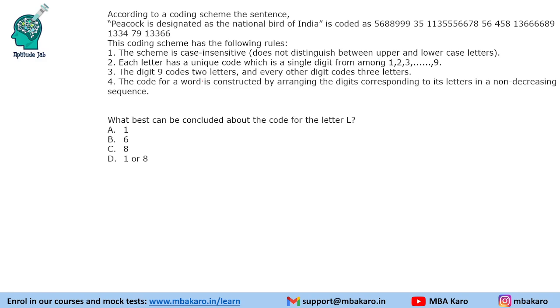The digit 9 codes for 2 letters and every other digit codes 3 letters. So we have 8 digits coding 3 letters each and 9 coding 2 letters. So total all 26 letters of English alphabet are coded using these digits. The code for a word is constructed by arranging the digits corresponding to its letters in a non-decreasing sequence.